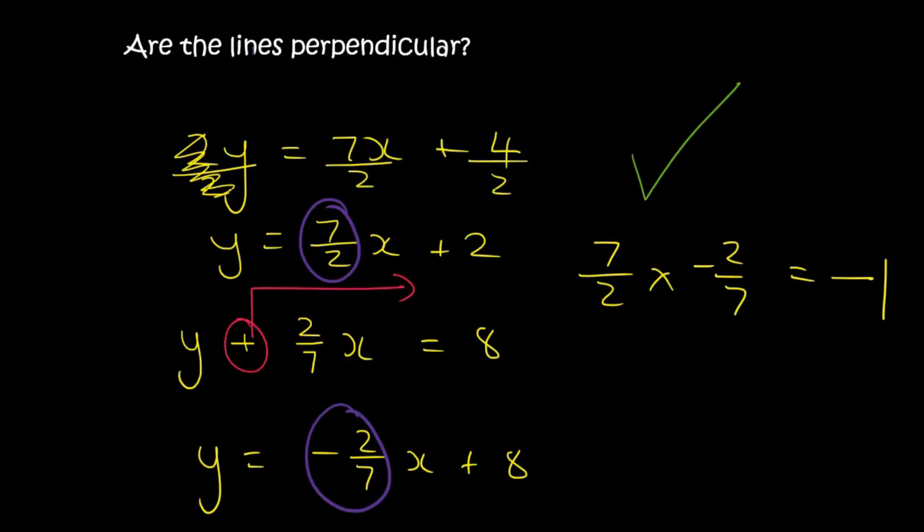So there we have it. Parallel lines are when the gradients are the same. Perpendicular lines are when you multiply the gradients and you get minus 1.